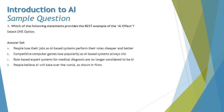Option B says competitive computer games lose popularity as AI-based systems always win. For some computer games, AI-based systems can outplay humans, but there is little evidence of a drop-off in popularity of such games, because people still find it challenging and look forward to competing with machines. So B is also ruled out.